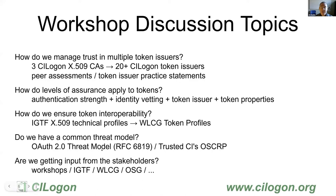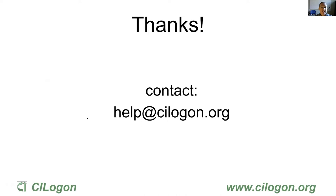How do we define our threat model? We have some good inputs — the OAuth threat model, Trusted CI's OSCRP, and others. And lastly, we need to make sure we get input from stakeholders. As we make this transition to tokens, the CI Logon project wants to make sure all our subscribers are well represented. Workshops like this are great opportunities, as are IGTF working groups and OSG meetings. Thanks for the opportunity to talk about CI Logon support for JSON Web Tokens. You can always contact us at help@cilogon.org.